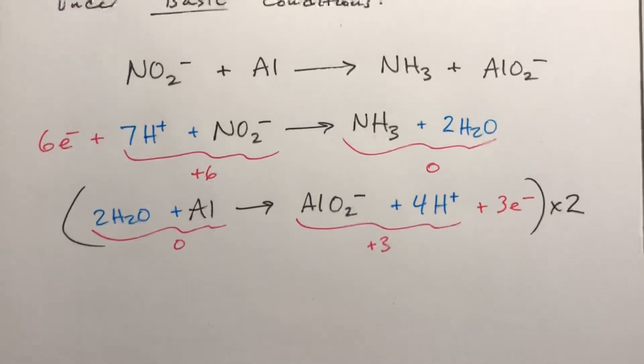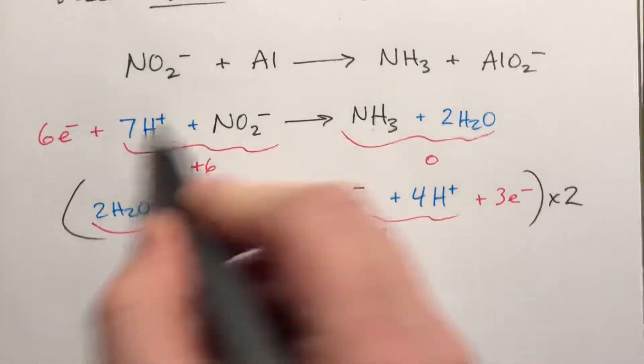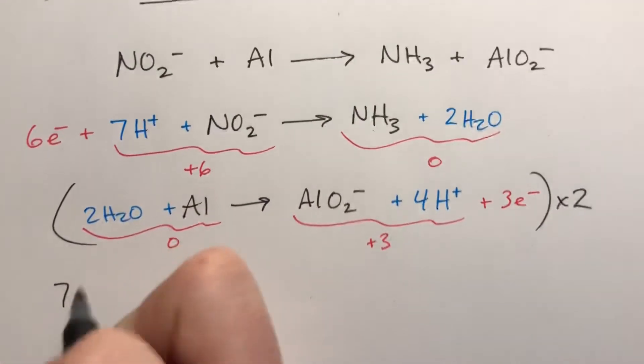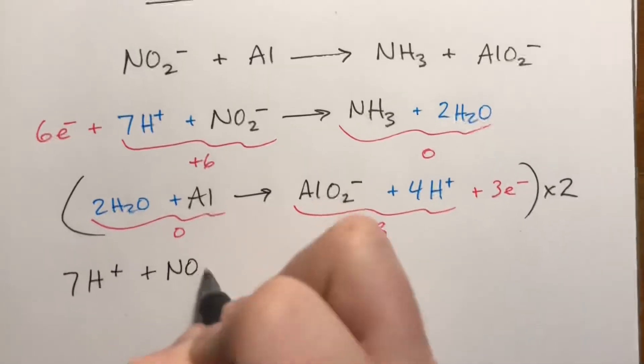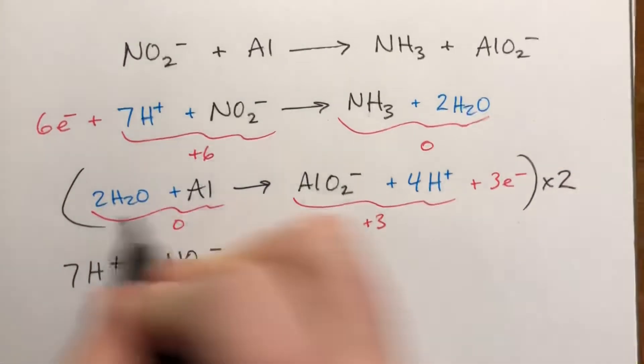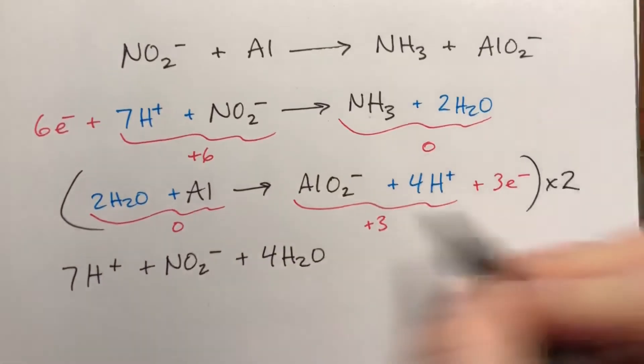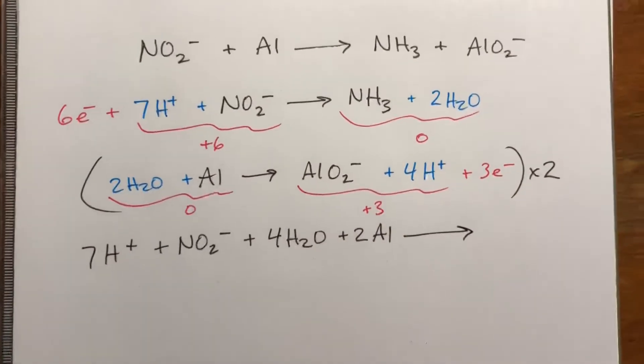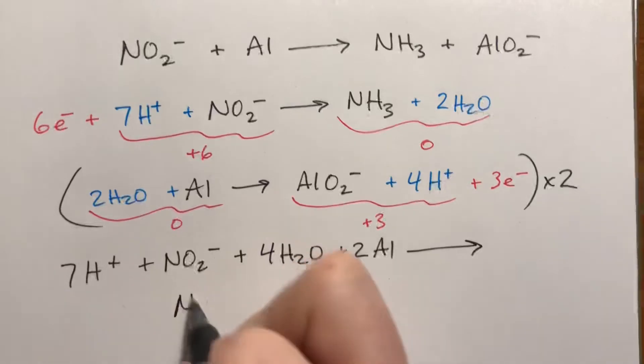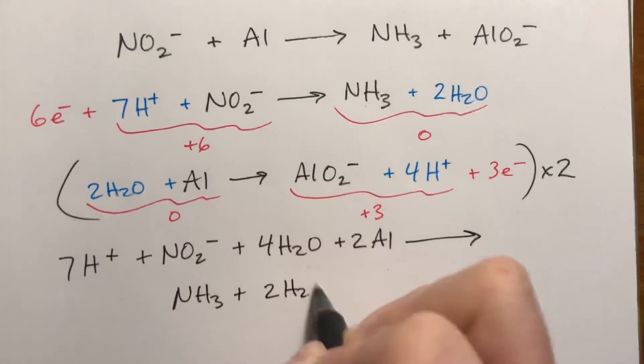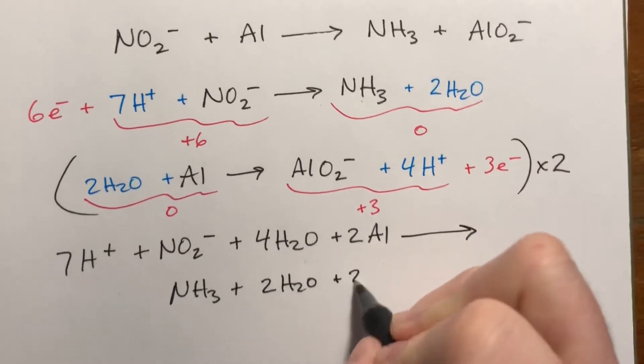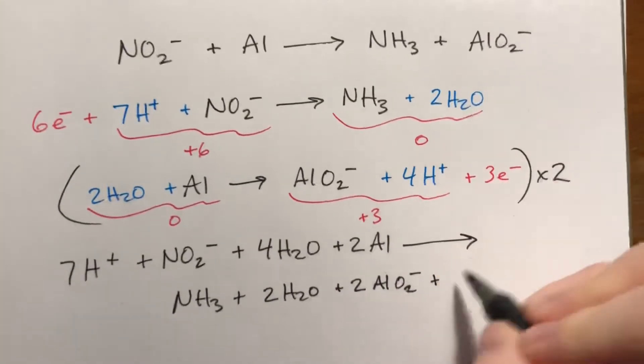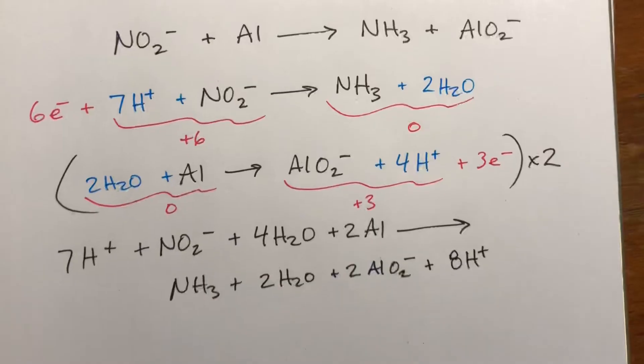Okay, so now I'm gonna rewrite everything. We know the electrons cancel, so I'm not gonna bother writing that down, but all the reactants on one side are the reactants, and then all the products, and then we'll cancel out what we can. So from this first reaction, we have seven H plus, plus NO2 minus, and then from this reaction, we have two times two waters would be four plus two aluminums. All right, two times everything. Okay, that's our reactants, and we're running out of space. I'm gonna do the products underneath. From the first reaction, we have NH3 plus two H2O, and then from this one, we're gonna double everything. So it's plus two AlO2 minus, plus eight H plus.